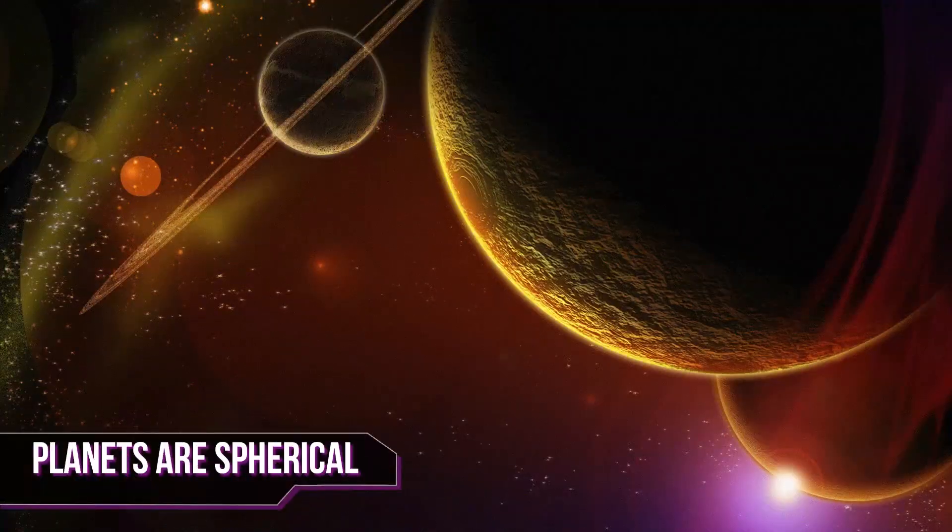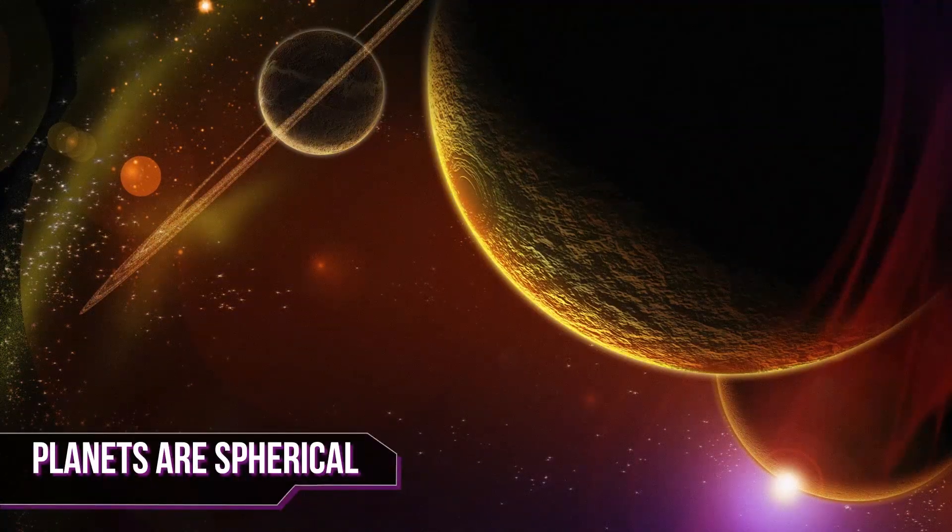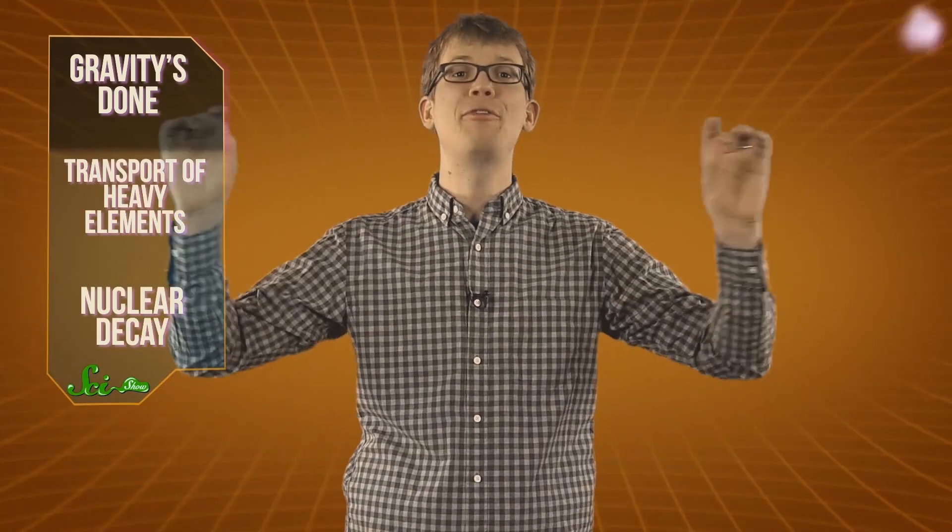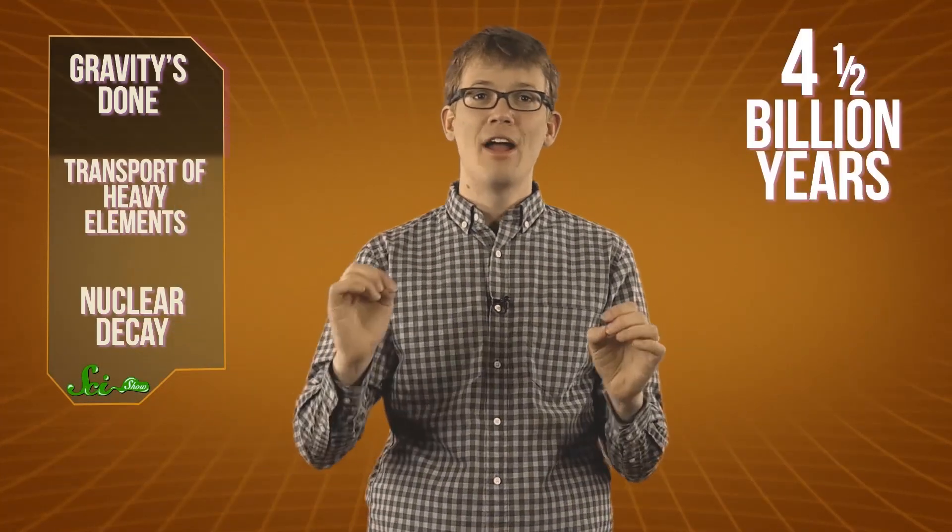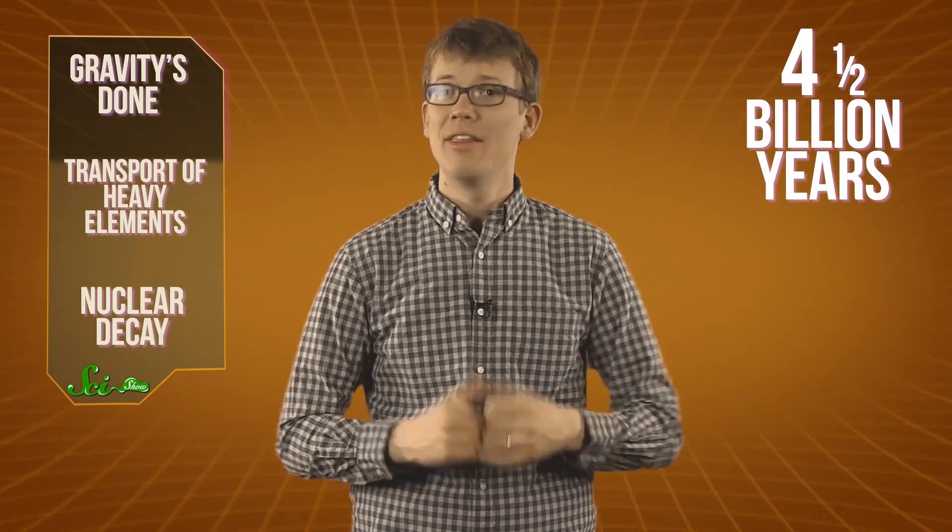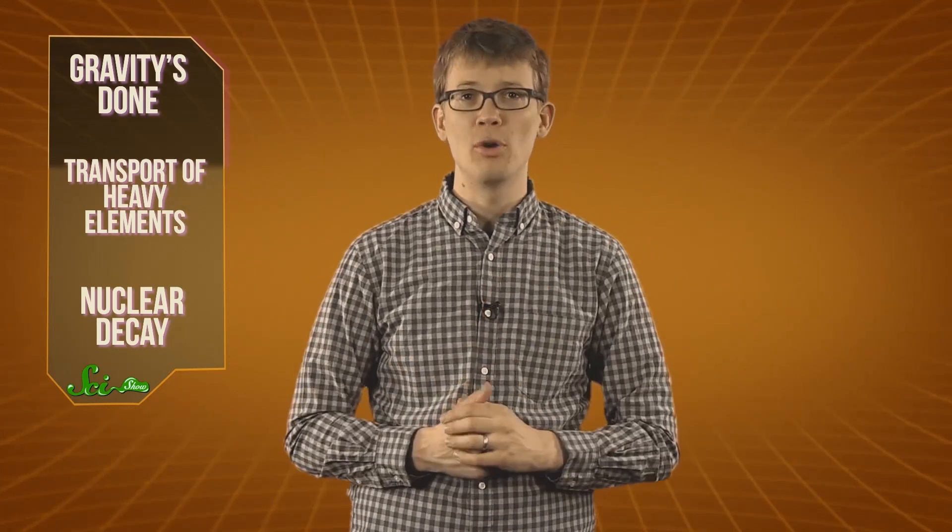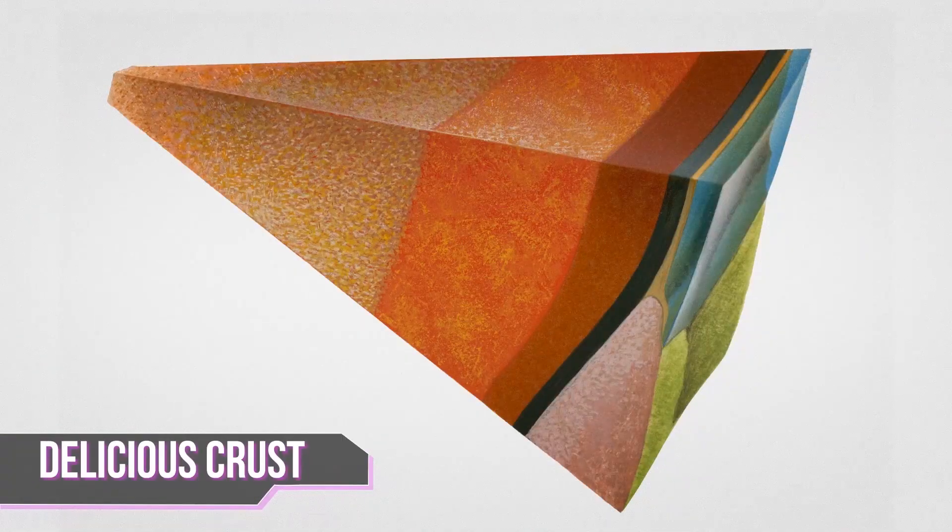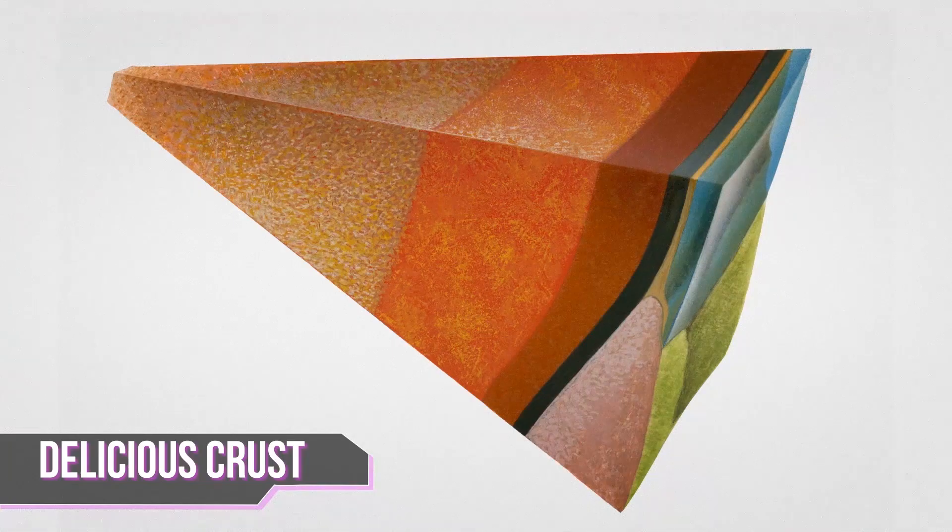That is why it, and every other planet, is nearly spherical. In a gravity-neutral environment, liquids form spheres. Amazingly, after four and a half billion years, some of that energy is still around. The Earth has cooled off, of course, forming a thin, delicious crust. But much of that heat is still there. And yet, we haven't really even started yet.